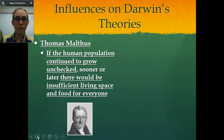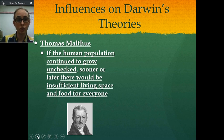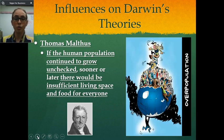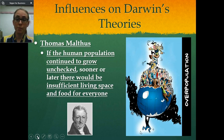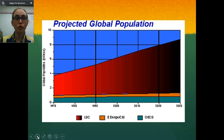Thomas Malthus was a scientist who said that if the human population continued to grow unchecked, sooner or later there would be insufficient living space and food for everyone. That is something we all need to think about in our lifetime. Currently, we have over 7 billion people on the planet, and the human population is growing exponentially.